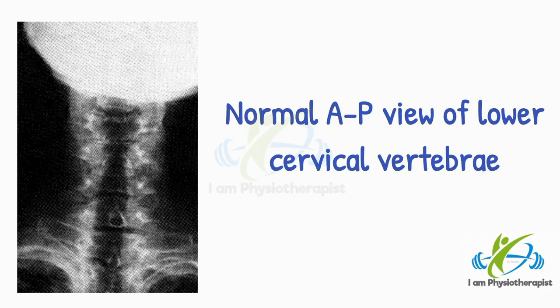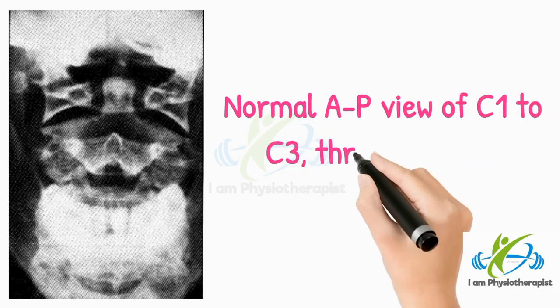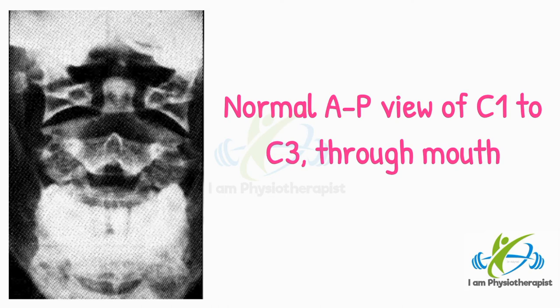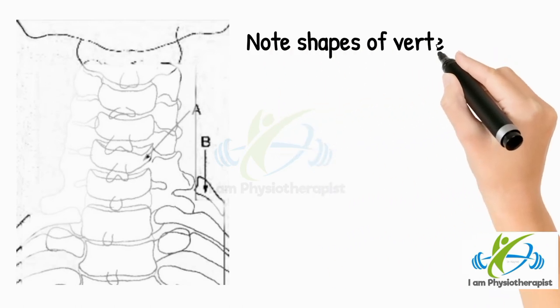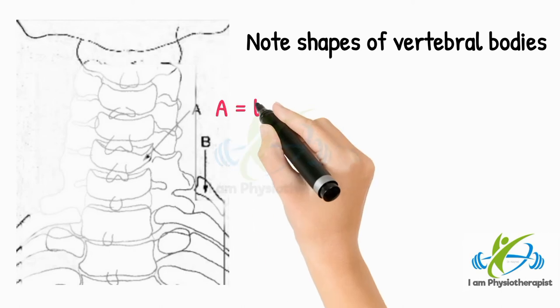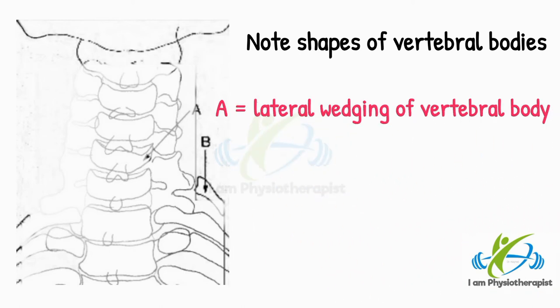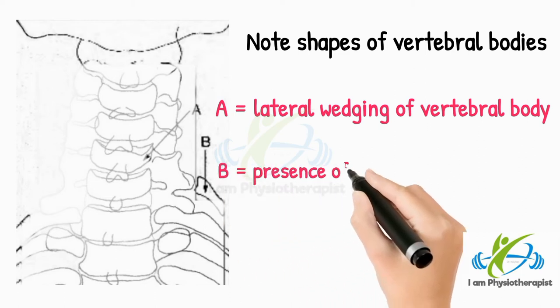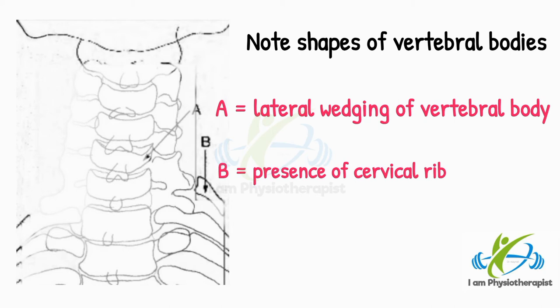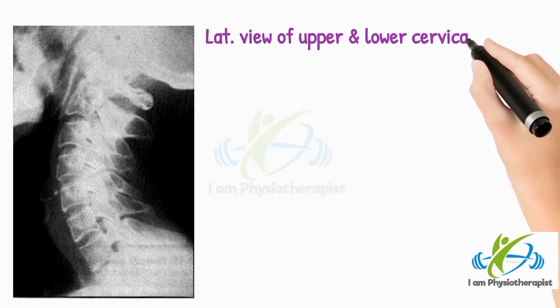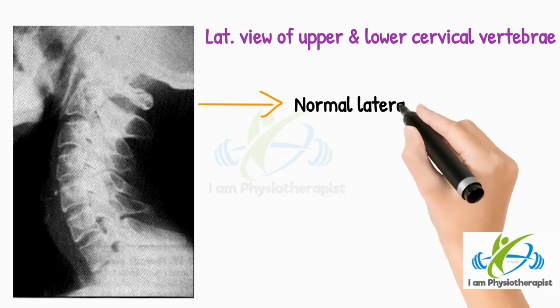Cervical radiographs. This X-ray shows the normal anteroposterior view of the lower cervical vertebrae. This X-ray shows the normal anteroposterior view of C1 to C3 vertebrae through the mouth. In the anteroposterior view, note the shapes of the vertebral bodies. Point A shows lateral wedging of the vertebral body, which may be due to fracture, tumor, or infection. Point B shows the presence of a cervical rib. This radiograph shows normal lateral projections of the upper and lower cervical vertebrae.